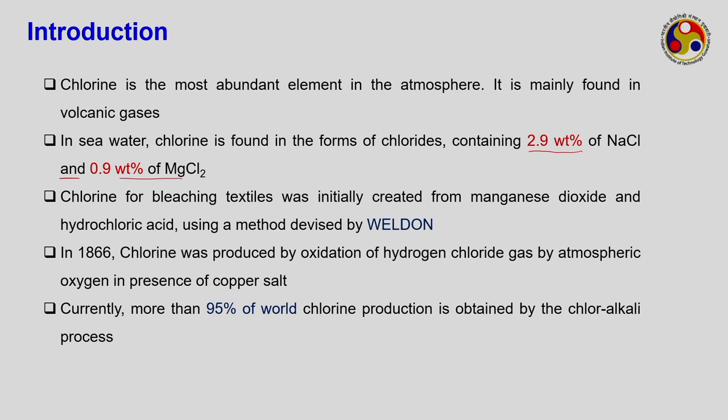Chlorine is a highly oxidizing agent and is used for bleaching textiles. Initially it was manufactured from manganese dioxide and hydrochloric acid — a method developed by Weldon. Then in 1866, chlorine was also produced by a different route: oxidation of hydrogen chloride gas by wet air oxidation in the presence of copper salt.